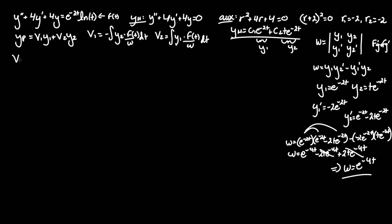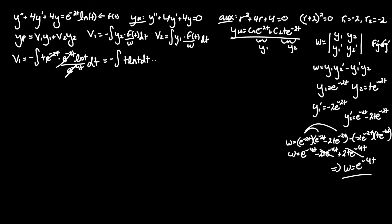Moving on to v₁: v₁ = -∫(y₂·f(t) / W) dt = -∫(te^(-2t)·e^(-2t)ln(t) / e^(-4t)) dt. The exponential terms in the numerator cancel with the denominator, leaving v₁ = -∫t·ln(t) dt. To evaluate this we use integration by parts.